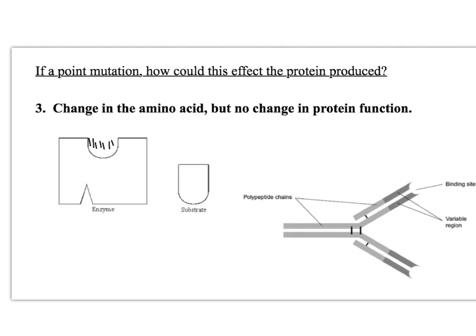Sometimes you will have a change in amino acid but the protein's function is still the same. For example, a key ionic bond needs to form in the active site to keep its shape. If a substitution mutation changes an amino acid in the primary structure, but that changed amino acid is not in the active site, the key ionic bond can still form, the active site remains the same shape, still complementary to the substrate, and enzyme-substrate complexes can still form.